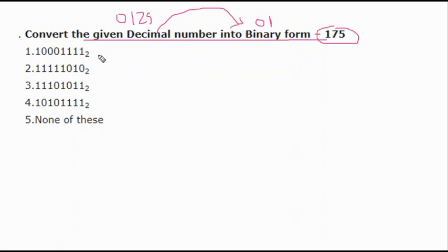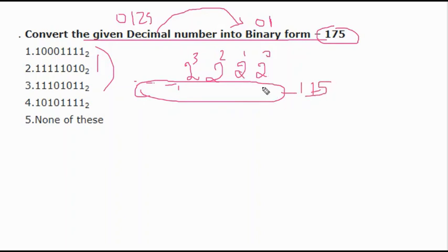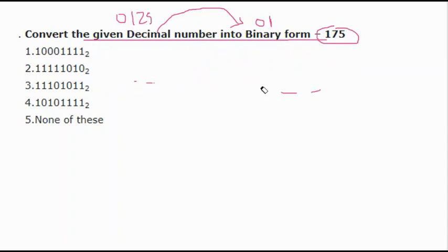There are two methods. The first method is writing in powers of 2 — 2^0, 2^1, 2^2, 2^3, etc. — and finding which powers sum to 175. This is a tedious method, so we'll skip it. The second, easier method is a ladder diagram: write 175 and divide repeatedly by 2, because binary has only two digits — 0 and 1.